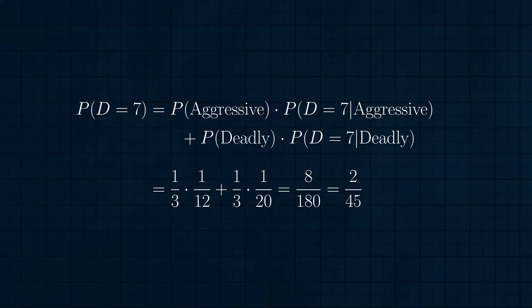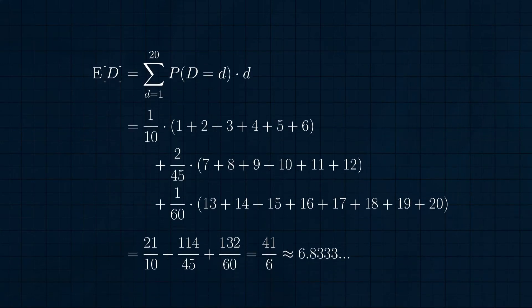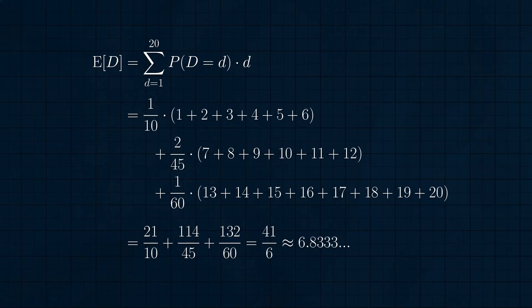For the amounts of damage 7 to 12, we only need to consider the cases where the monster is aggressive or deadly. We again break it up to find that the total probability of 7 damage is 2/45. Lastly, for damage 13 and above, we know the monster has to be deadly. So the probability that the damage is 13 equals the probability that the monster is deadly times the probability that the damage is 13 given the monster is deadly, or 1/3 times 1/20, or 1/60. So the expected value of the damage is the sum of the numbers 1 through 6 times 1/10, plus the sum of the numbers 7 through 12 times 2/45, plus the sum of the numbers 13 through 20 times 1/60. That all simplifies down to 41/6, or 6.8333.